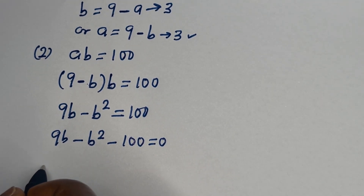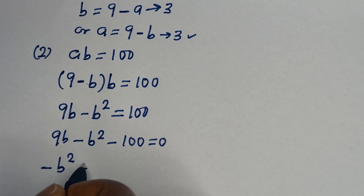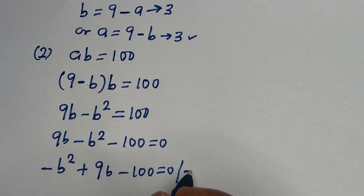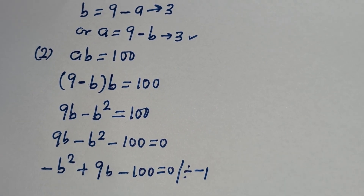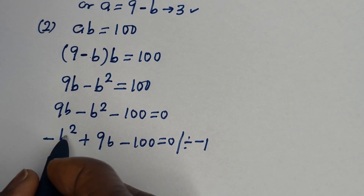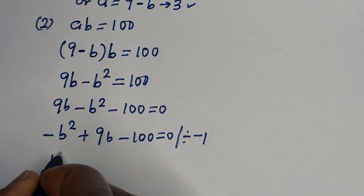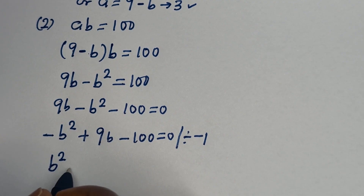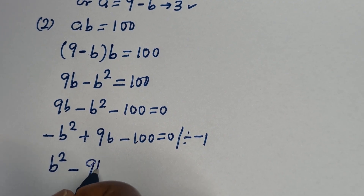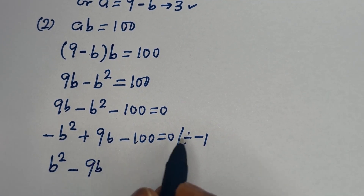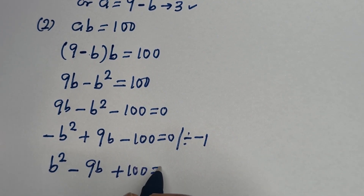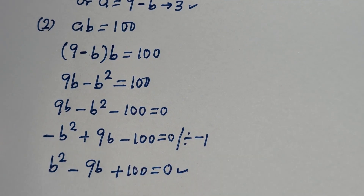This is minus B squared plus 9B minus 100 is equal to 0. Let us divide the whole equation by minus 1. Minus B squared divided by minus 1 gives B squared; 9B divided by minus 1 gives minus 9B; then minus 100 divided by minus 1 gives plus 100, equal to 0. This is a quadratic equation.